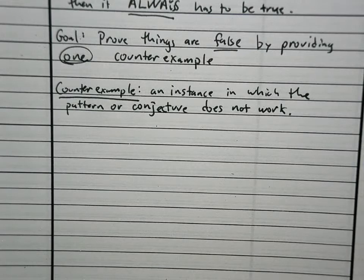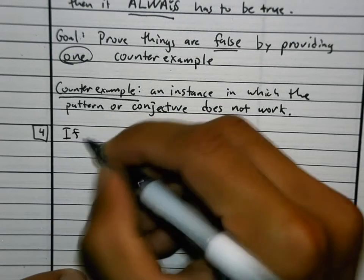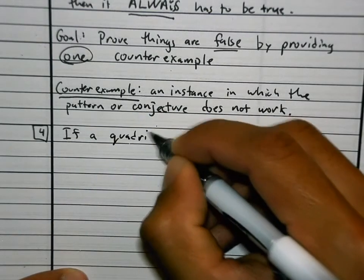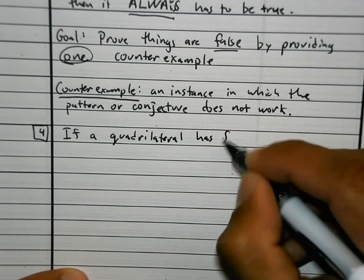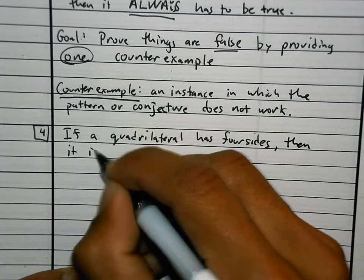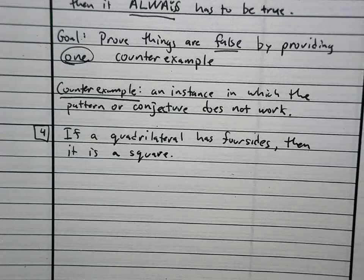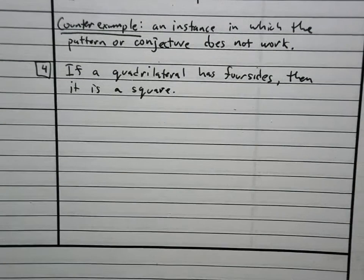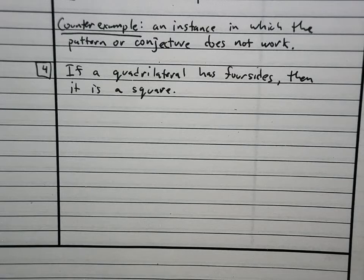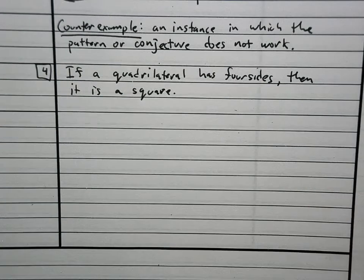I'm going to give you an example. And this example is like number 4 on your worksheet. Number 4 on your worksheet says this: If a quadrilateral has 4 sides, then it is a square. This is the weirdest kind of math that we do almost all year right here because it's reasoning. If a quadrilateral has 4 sides, then it is a square. So there's going to be a statement. This statement has a hypothesis and a conclusion.